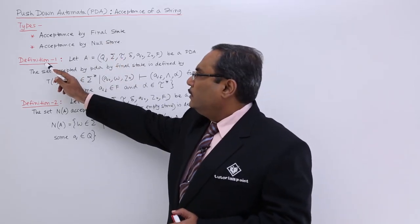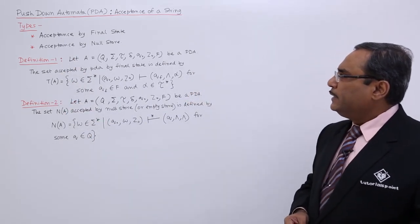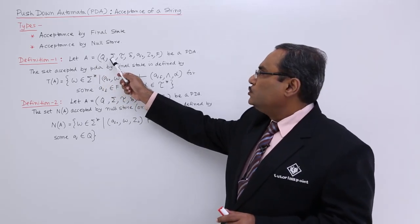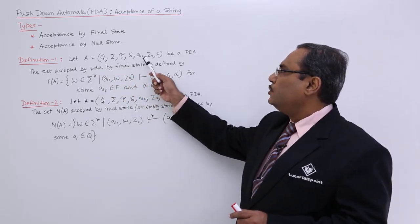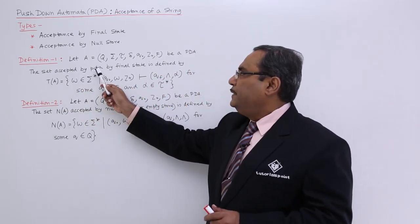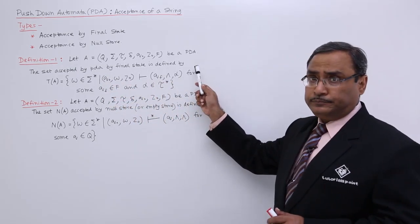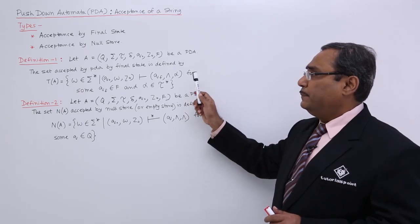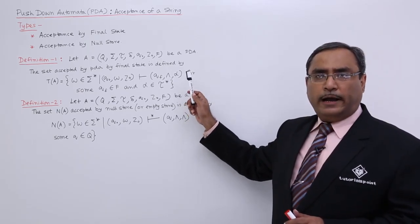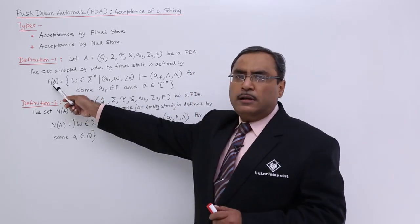Let us go for type number 1. Definition: Let A, a pushdown automata (Q, Σ, τ, δ, Q₀, Z₀, F) be a PDA. The set accepted by PDA by final state is defined by - whenever a PDA is accepting one input string by reaching to the final state, it will be denoted by T(A), where A is the pushdown automata name.